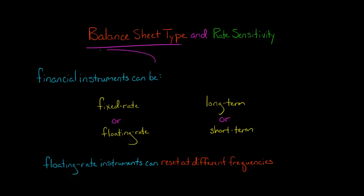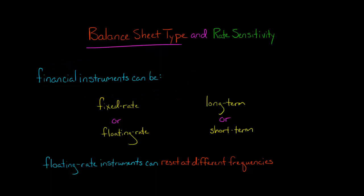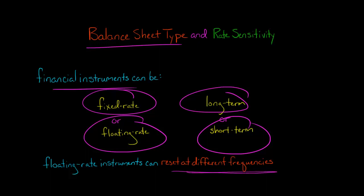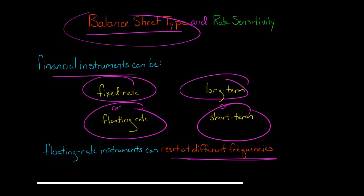The reason is that banks hold financial instruments both as assets and liabilities. Those financial instruments can be fixed rate, they can be floating rate, they could be long term or they could be short term. And even if you have floating rate assets and floating rate liabilities, there can still be differences because floating rate instruments can reset at different frequencies. All these differences lead to different balance sheet types for banks.